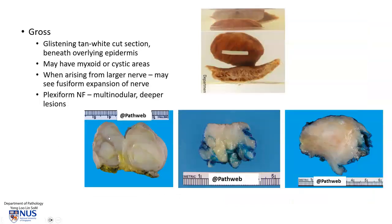Grossly, there is usually a rather glistening, whitish cut surface, and it is just beneath the epidermis. Here we can see the epidermis, and there is this whitish area which is the region of the neurofibroma. This lesion is a little bit more nodular and rounded — again, we can see the skin, the epidermis, and this glistening whitish appearance which is characteristic of neurofibroma.